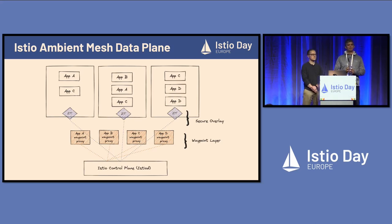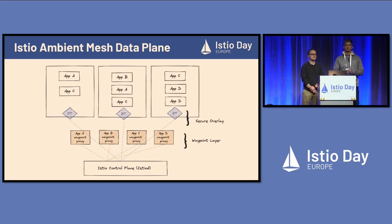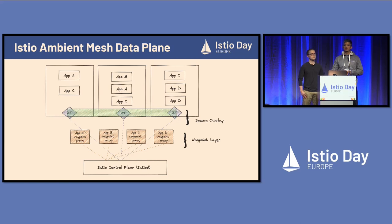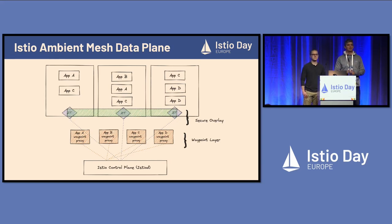From the security standpoint, the way ambient mesh is implemented separates the data plane into two distinct layers. The first layer focuses on the security aspects of the mesh. The second layer, which lives on top of this secure overlay, focuses on layer 7 capabilities you'd expect from a service mesh. The component representing the secure layer is called z-tunnel, which lives on each host in a cluster and pushes that functionality closer down into the CNI or networking layers, removing it from the application.